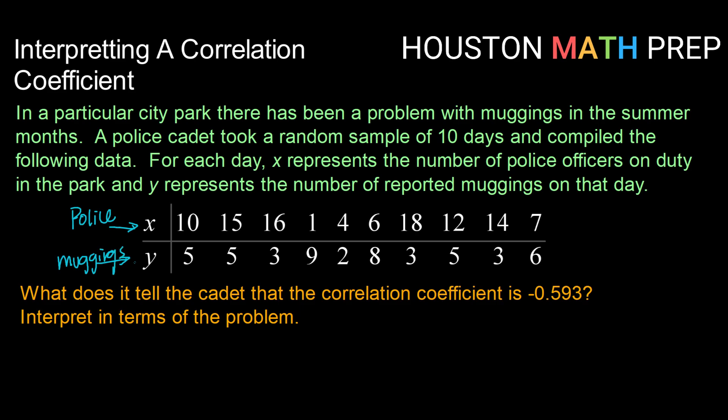What does it tell the cadet that when a linear regression is run, we get a correlation coefficient of negative 0.593? Interpret this in terms of the problem.